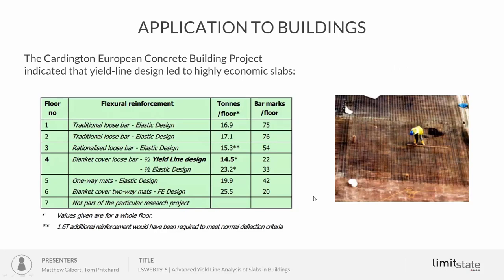In buildings, around the same time there was a lot of interest in using yield line design to reduce the complexity of reinforcement and the tonnage of steel required. In the Cardington European Concrete Building Project, each floor had a different design approach, and yield line design led to the minimum weight of steel required and almost the simplest form of reinforcement — just 22 bar marks per floor.